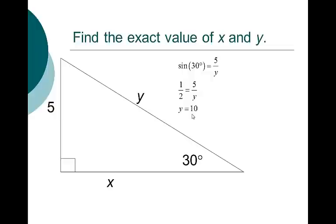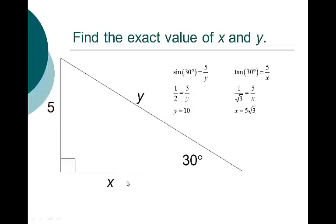Exact means exact. Now to find x, what I could have done is Pythagorean Theorem, but I want to play the tangent game one more time. So I set tangent 30, which is opposite over adjacent, equal to 5 over x. The tangent of 30 is 1 over the square root of 3. I set that equal to 5 over x and cross multiply. I get x equals 5 square root of 3. That's the exact answer. If we want an approximated answer, you would use your calculator to take 5 times square root of 3.